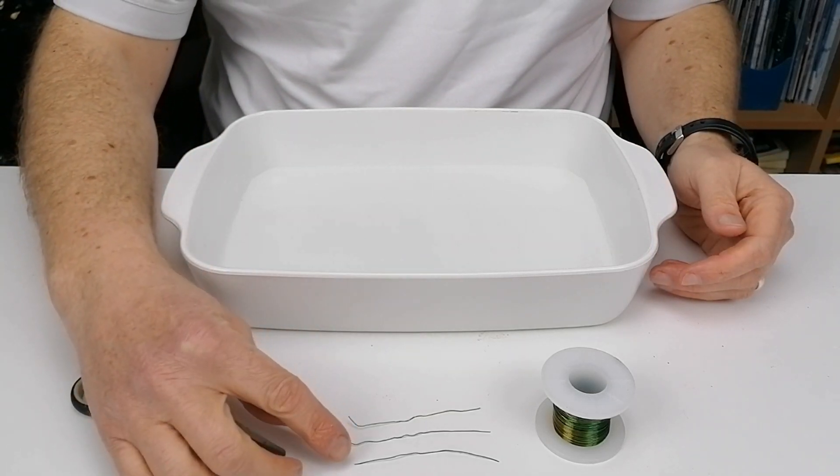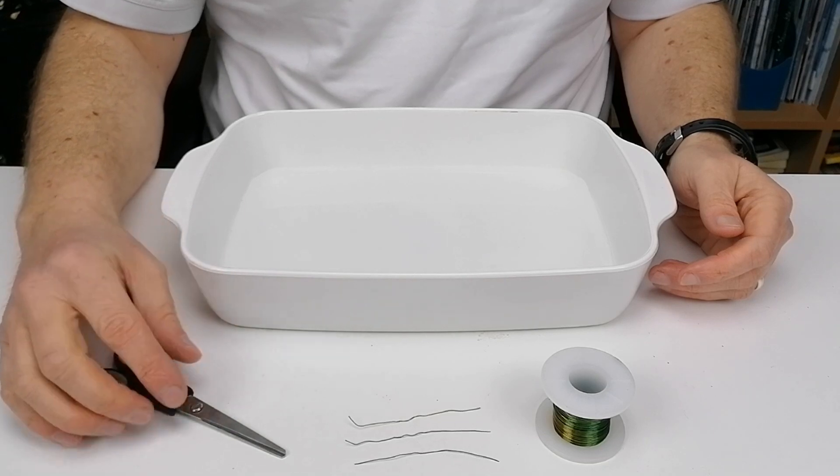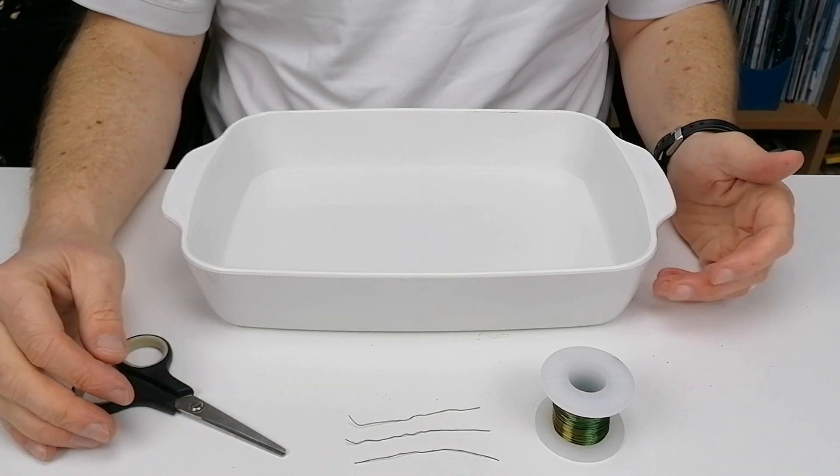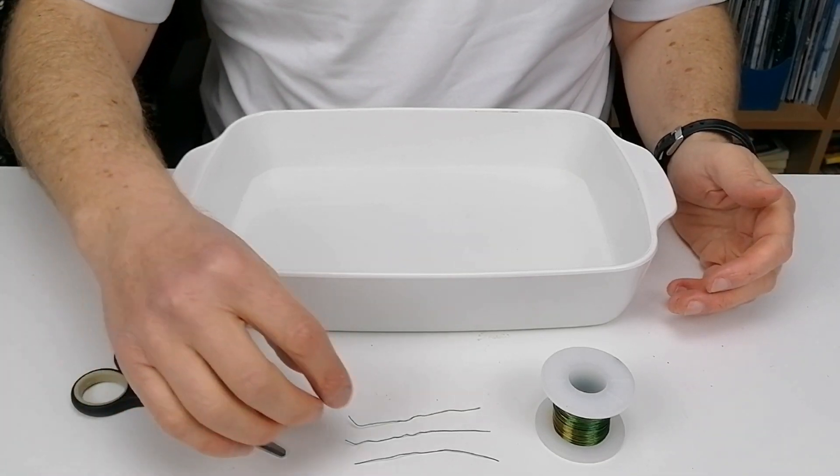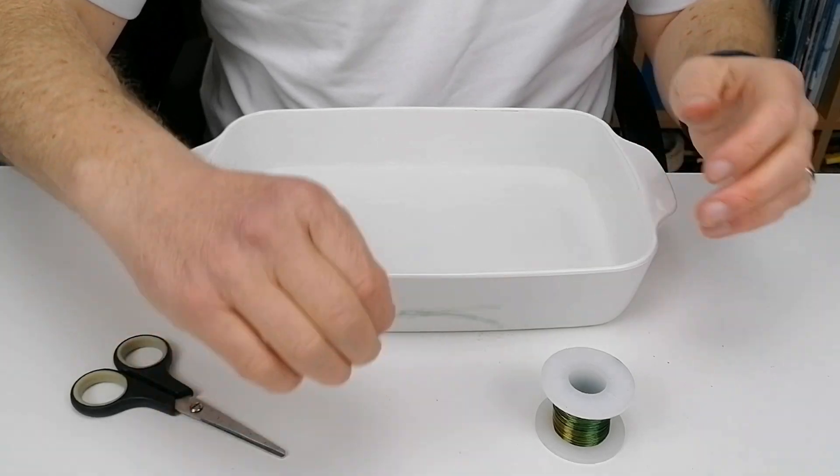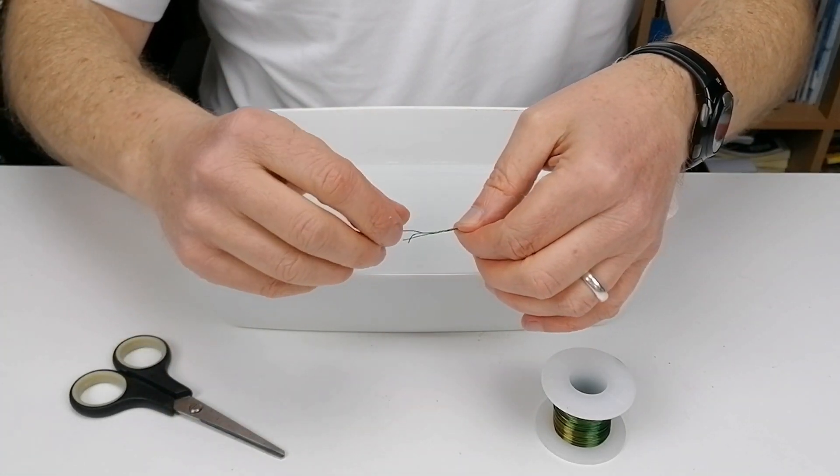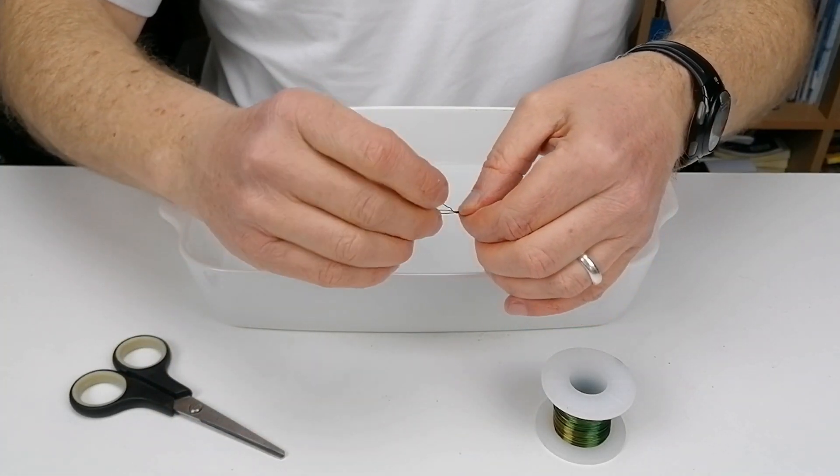So in this case what I've done already is I've cut three pieces of wire about eight centimeters or three inches. And what you need to do is take the three wires and twist the center bits together.